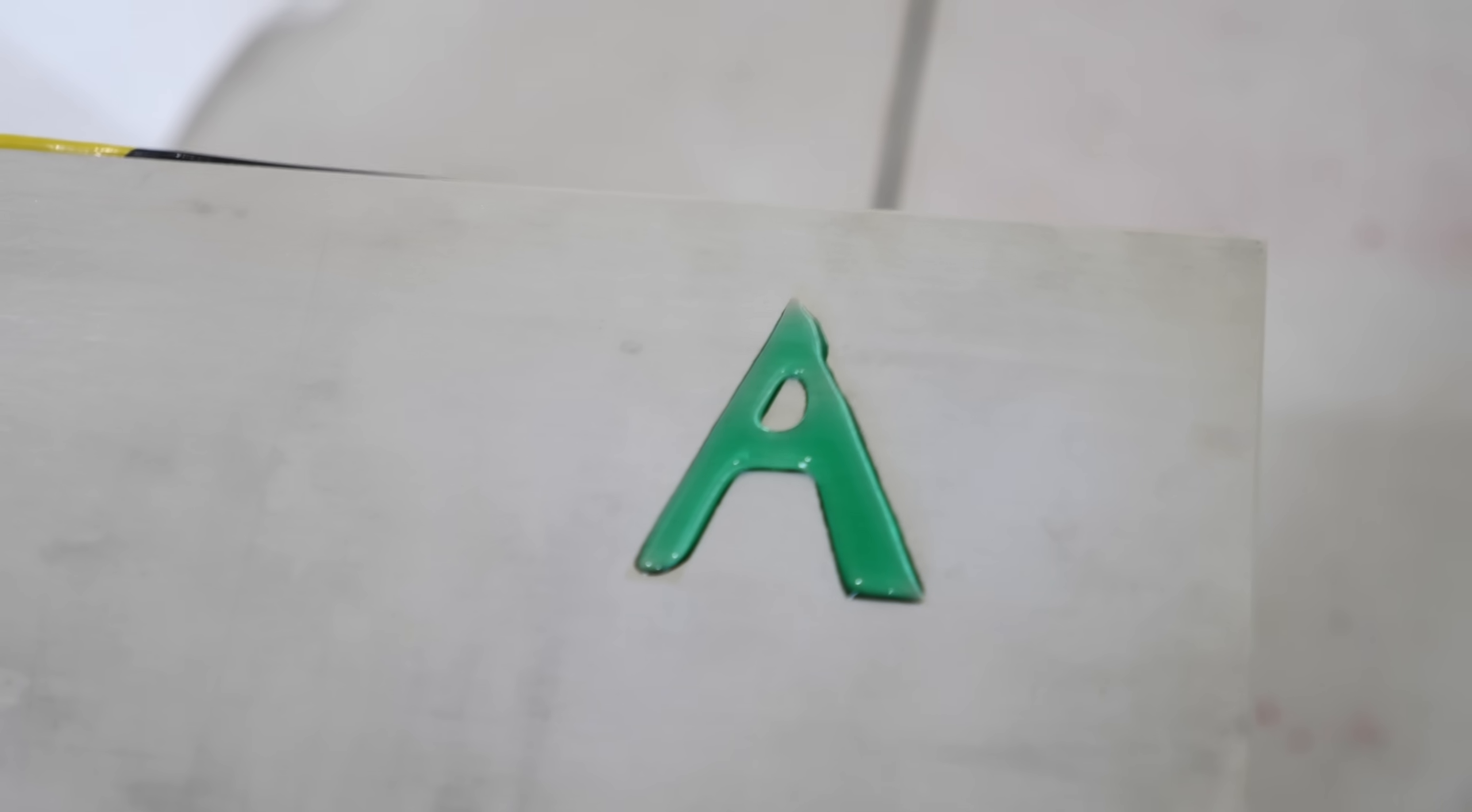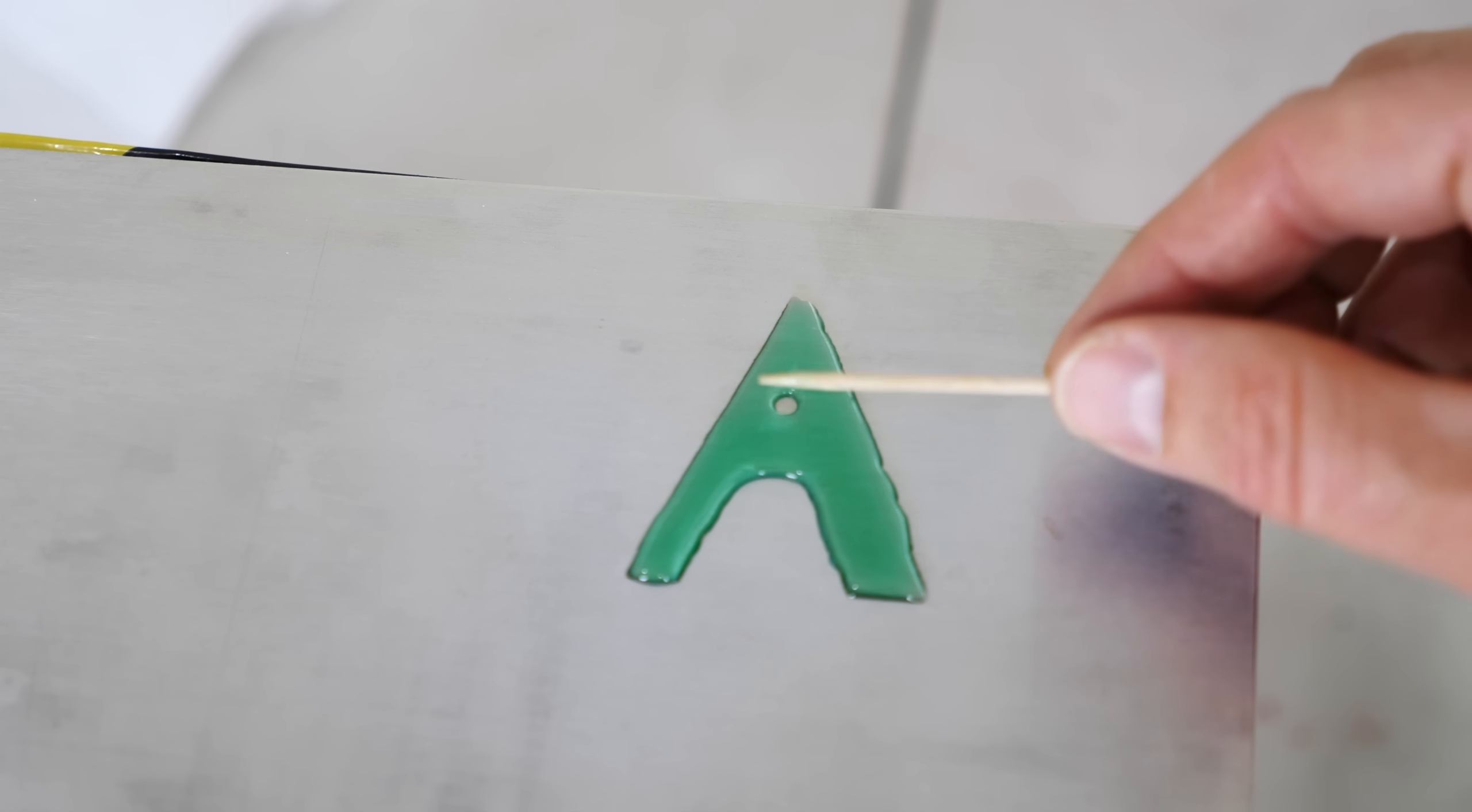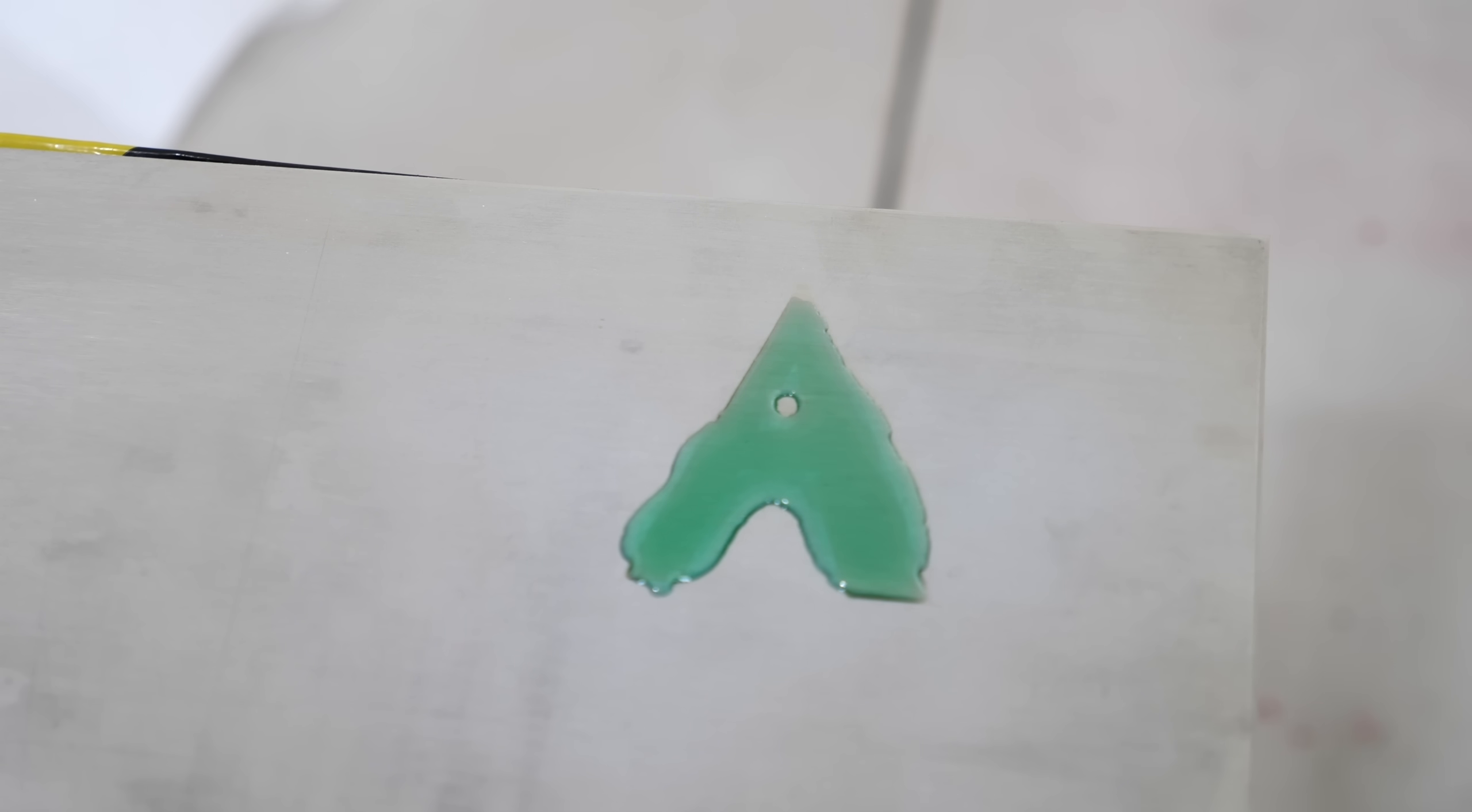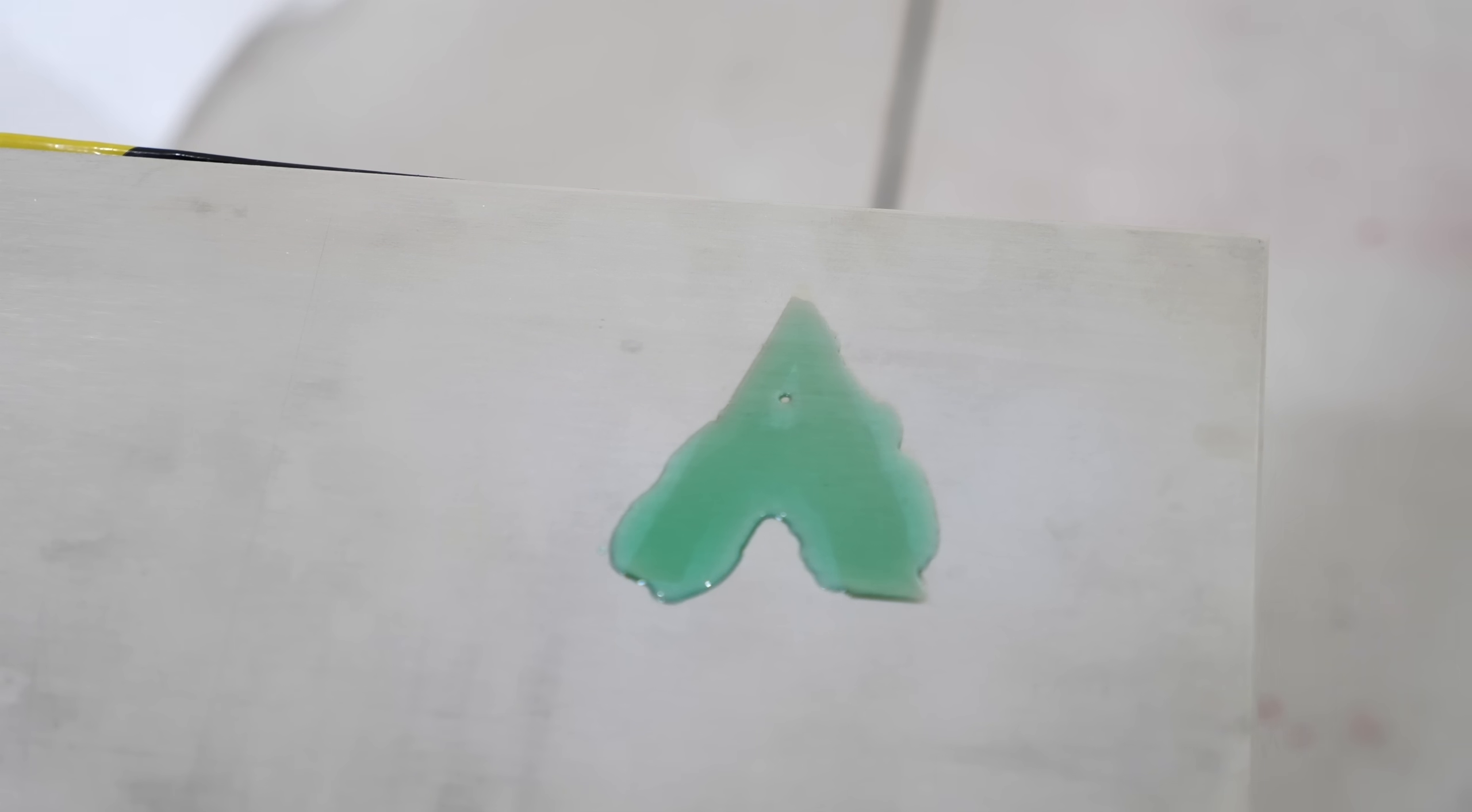So we have our A here. Now watch what happens when I put a little bit of soap on my toothpick and touch it to the liquid in the A. It's almost like it was a solid block A before, and then once I put the liquid soap on it, it just melts it away. So cool! That's because the surface tension in the water was lowered so much that it couldn't keep those edges up on the sides of the super hydrophobic surface.